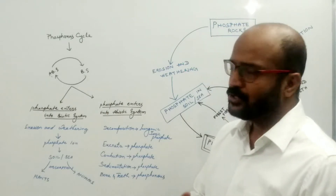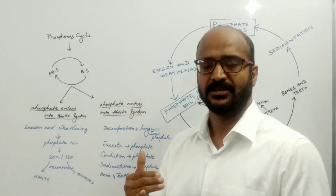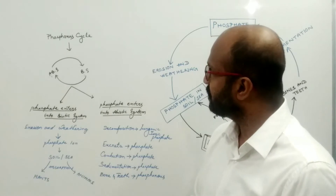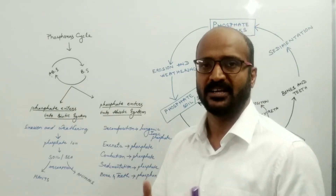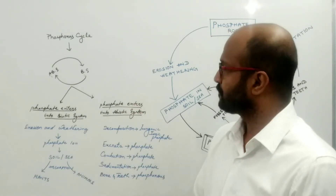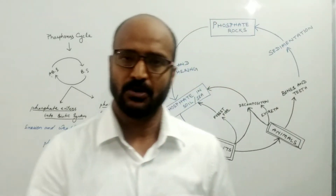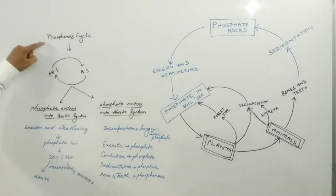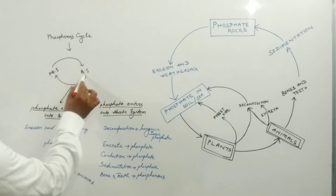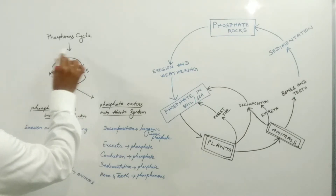As you all know, in any biogeochemical cycle, a chemical or nutrient moves from an abiotic system to a biotic system and again from a biotic system back to an abiotic system, constituting a cyclical form. Phosphorus is an important nutrient for humans, animals, and plants. The cyclical movement of phosphorus from the abiotic system to the biotic system and back again constitutes the phosphorus cycle.